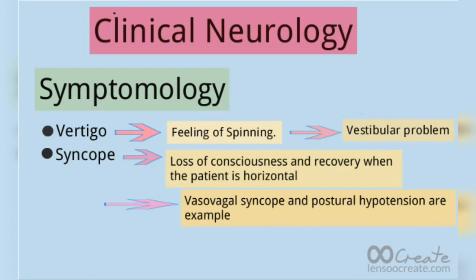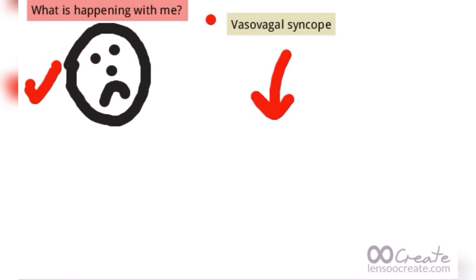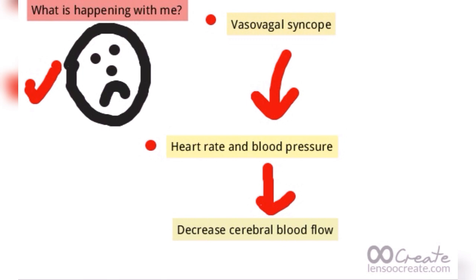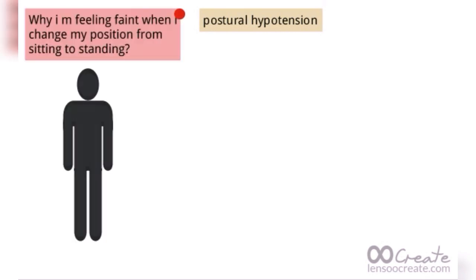Examples of syncope are vasovagal syncope and postural hypotension. In vasovagal syncope, due to some emotional stress, there is a sudden drop in heart rate and blood pressure, which leads to a sudden decrease in cerebral blood flow, and hence syncope. This is the mechanism behind vasovagal syncope.